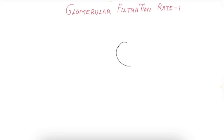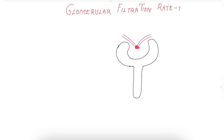This is a video on the glomerular filtration rate. I'm drawing a Bowman's capsule, a nephron, and the tubular part of the nephron. These are the glomerular capillaries, the afferent arteriole, and the efferent arteriole. Across the glomerular capillaries, ultra filtration occurs — this green arrow represents ultra filtration.